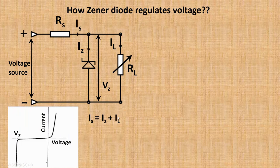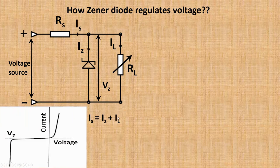This is the IV curve of the zener diode. It is to be noted from the graph that in the reverse bias mode, after a particular voltage V_Z, current increases sharply without any significant increase in the voltage. This is the property that is being used here.